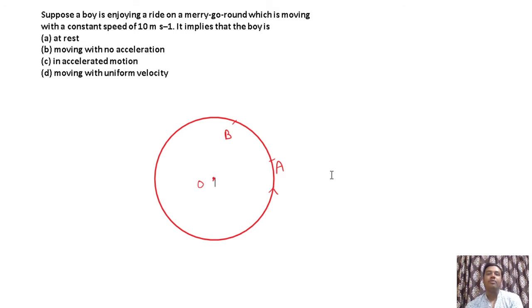Hello students, in this video we will be doing question number 5 of NCERT exemplar. The question is saying: suppose a boy is enjoying a ride on a merry-go-round which is moving with constant speed of 10 meters per second. It implies that the boy is...